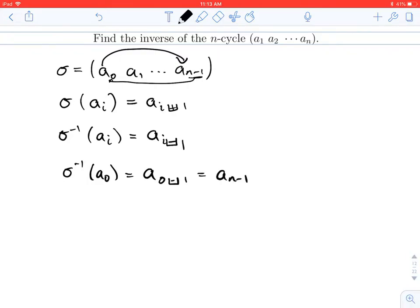So our inverse should just be the cycle that we can get by reducing everything by 1. So let's write that in cycle notation. If we start with a_(n-1), reduce by 1, a_(n-1) goes to a_(n-2), which would go to a_(n-3), et cetera, would go to a_3, a_2, a_1.